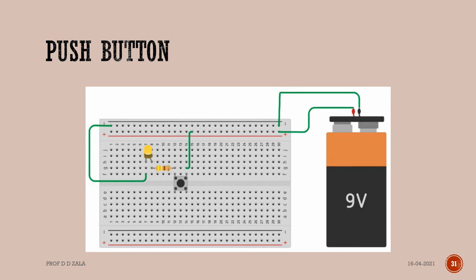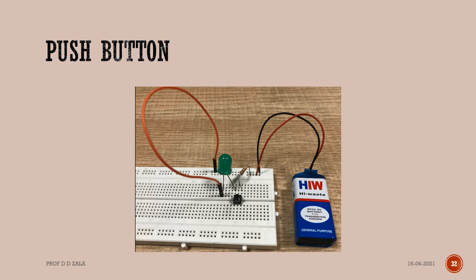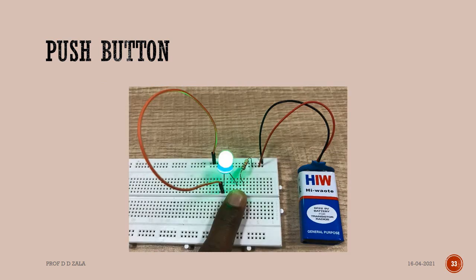Let us add a push button to the previous circuit and use it to change the state of the LED. This image shows the proper connections. The LED anode is connected to the second power rail, meaning positive voltage, through a resistor and a push button. Let us see the live setup. When the push button is pressed, the LED is glowing as expected.